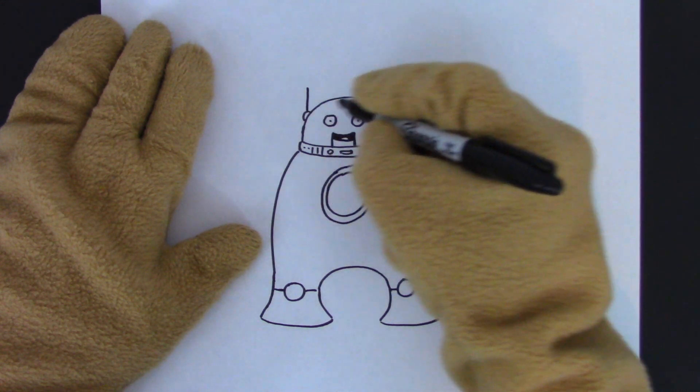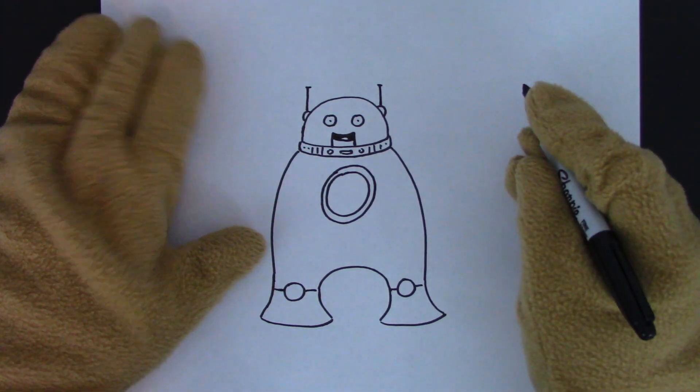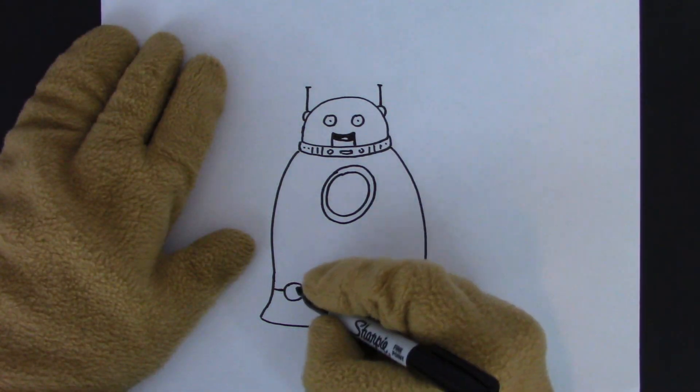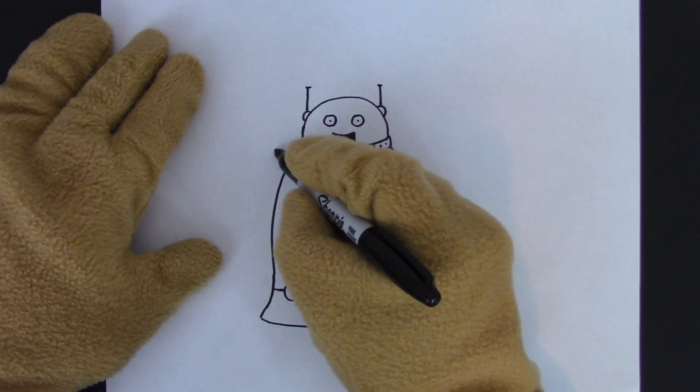And let's make these antennas instead of eyes. So you can change your drawing as you go. You can make it any way you like. There's no rule to drawing.